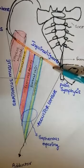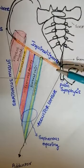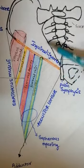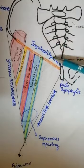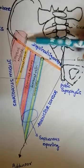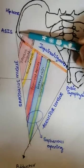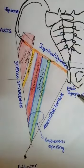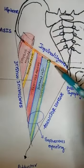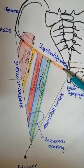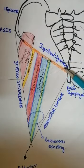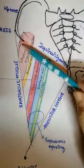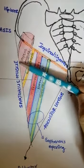The base of the femoral triangle is formed from the inguinal ligament, which continues from the anterior superior iliac spine of the hip bone towards the pubic symphysis. This inguinal ligament forms the base of the femoral triangle.